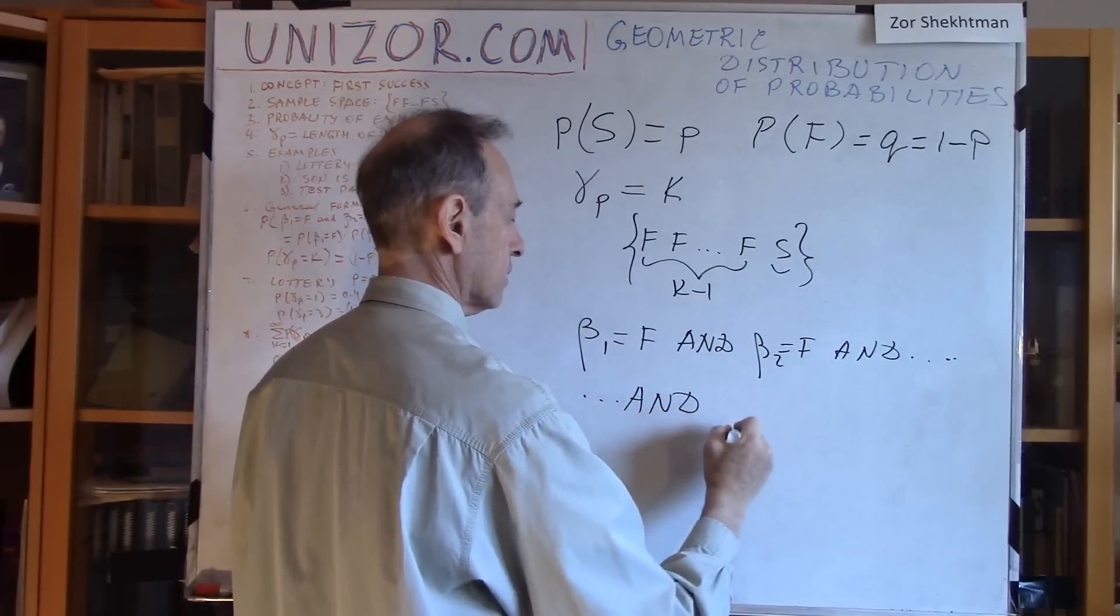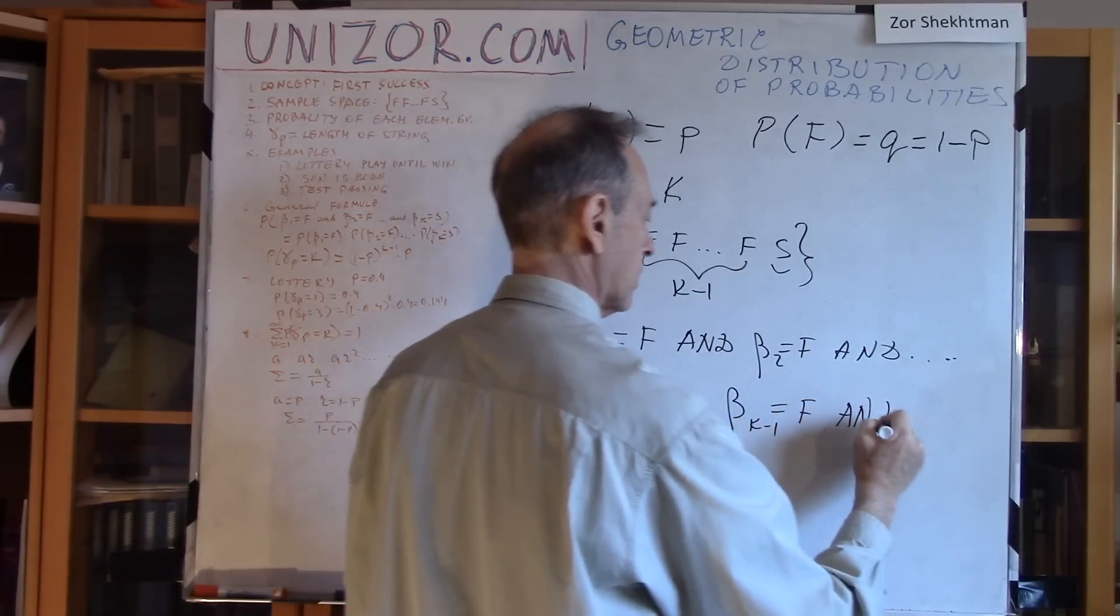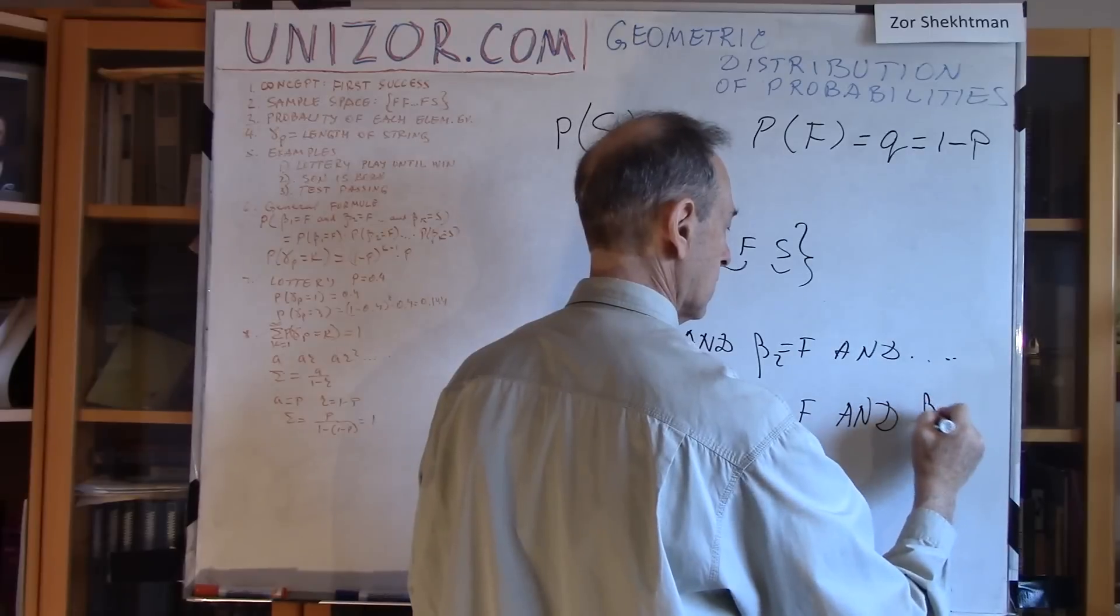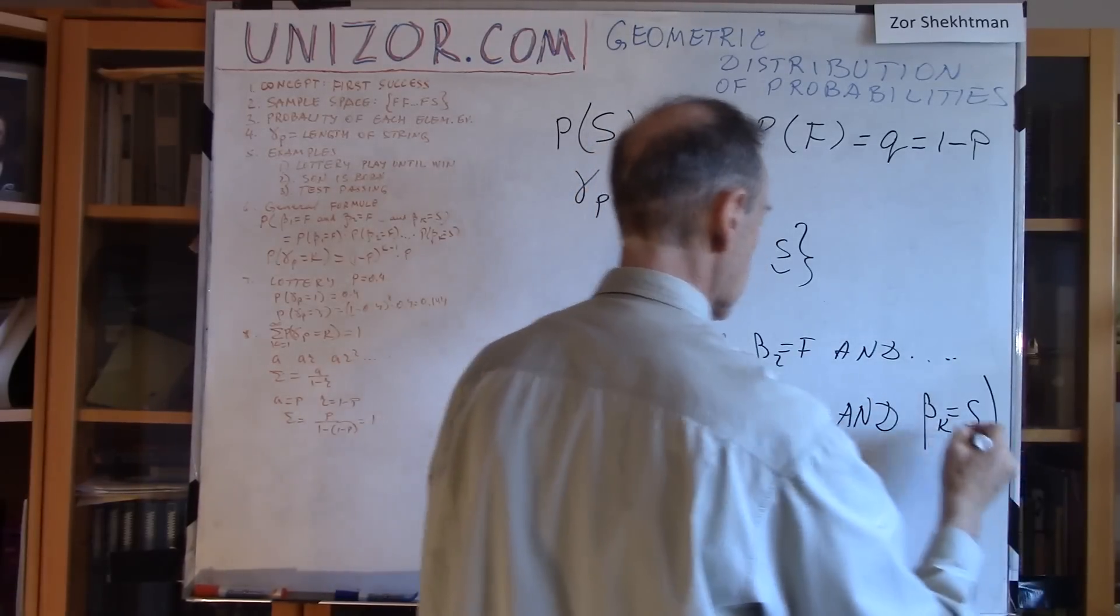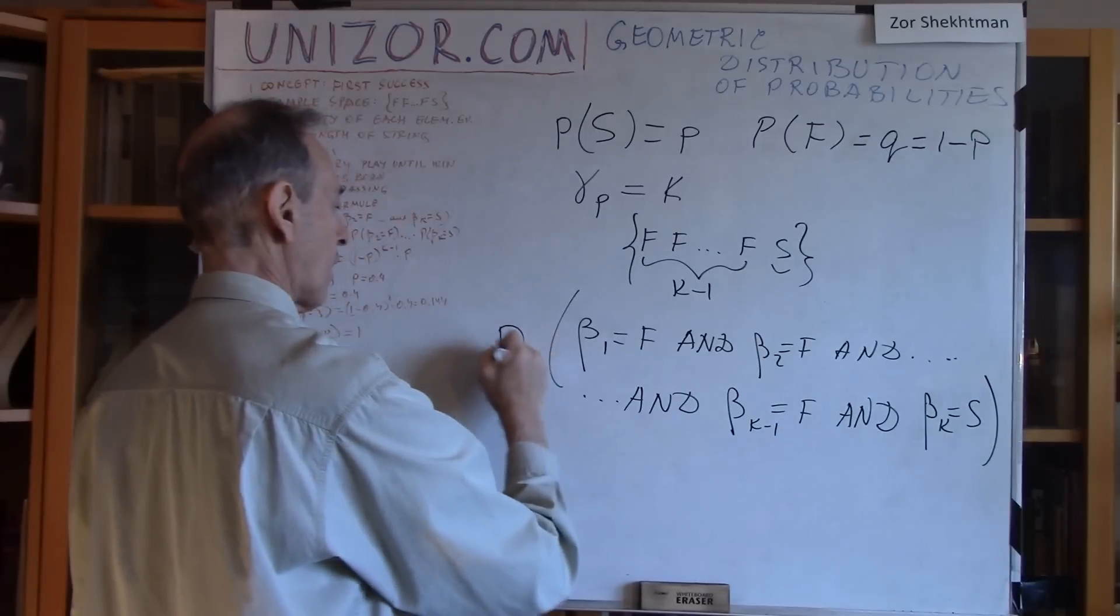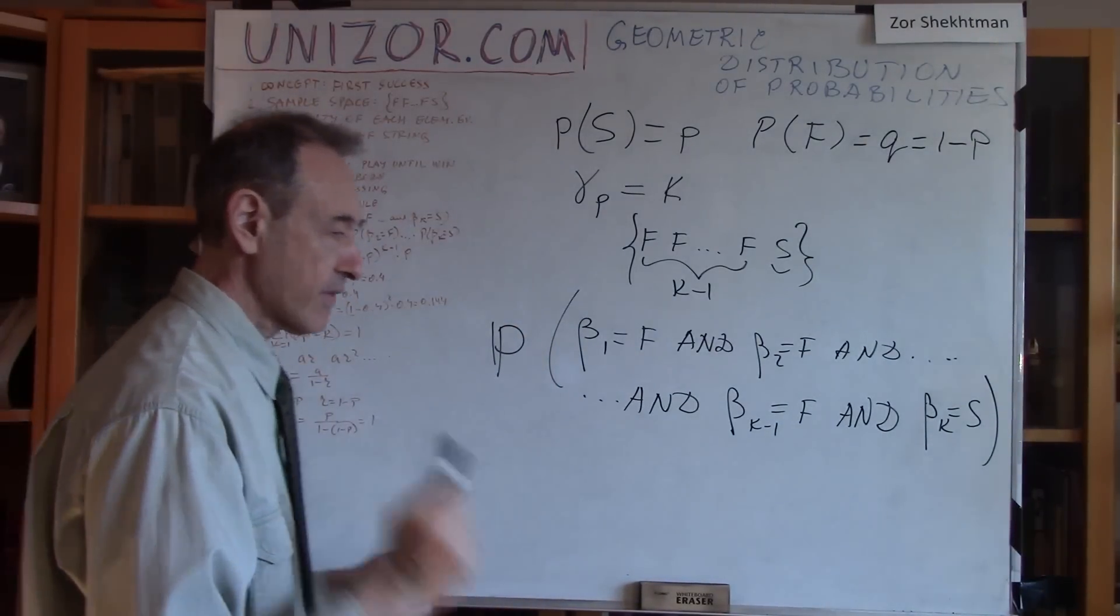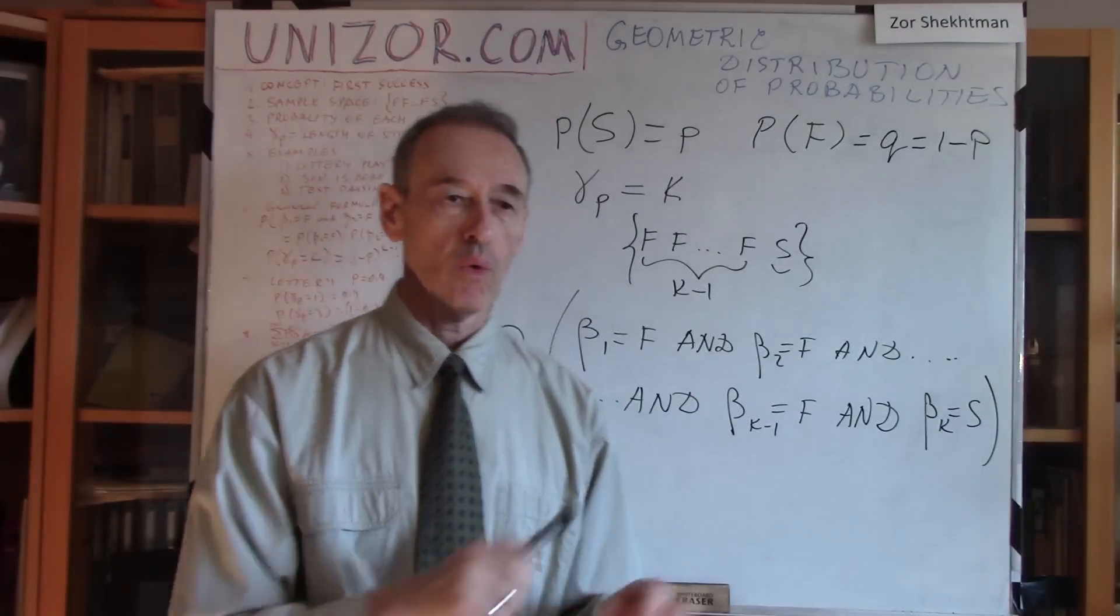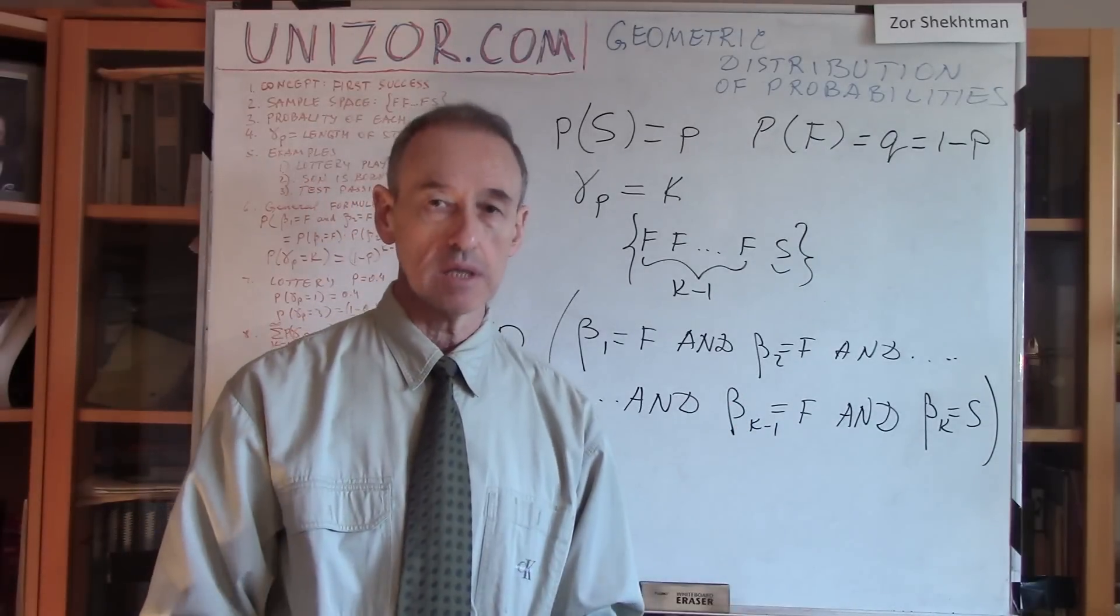And the K minus 1 equals to failure. And the Kth Bernoulli trial equals success. This is the probability we are looking for.